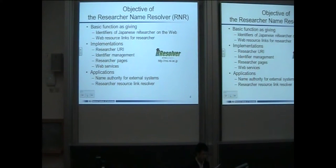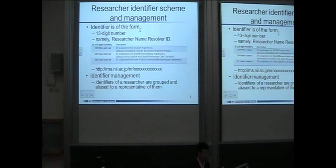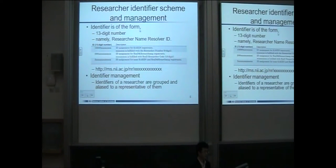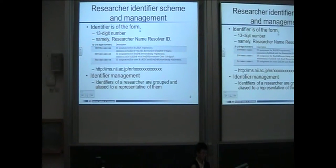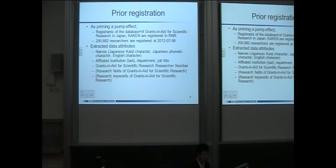We implemented some web-friendly functions including a researcher URL and foreign management of research-based web application resources. This slide shows the identifier mechanism and identifier form. It is a 30-digit number which is based on the existing major researcher number, a pre-used grant database number, and the research code.